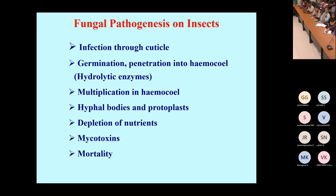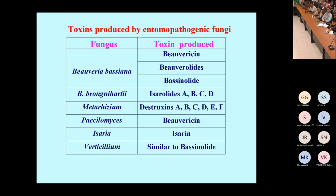Once the insect dies, the fungus multiplies outside and forms conidia, which again act as an inoculum for infecting other pests. Beauveria bassiana produces toxins like Beauvericin, Beauverolide, and Bassinolide. Metarhizium produces Destruxin toxin. These are different toxins produced by different groups of entomopathogenic fungi.